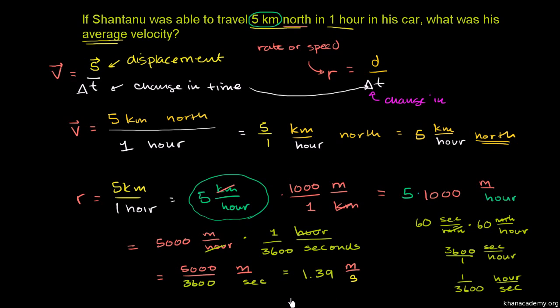So Shantanu was traveling quite slow in his car. Well, we knew that just by looking at this. 5 kilometers per hour, that's pretty much just letting the car roll pretty slowly.